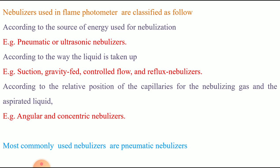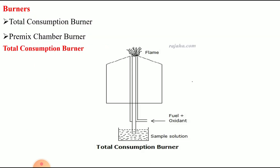We have different types of nebulizers. Based on the source of energy, we have pneumatic and ultrasonic nebulizers. According to the way liquid is taken, there are suction, gravity-fed, and reflex nebulizers. According to the relative position of the capillary and nebulizing gas, there are concentric nebulizers. Even though there are many types, the most commonly used nebulizer is the pneumatic type.